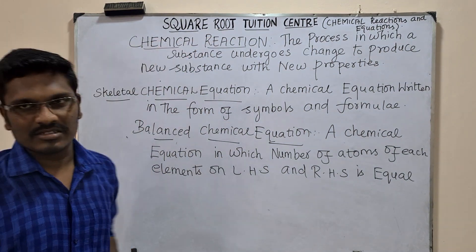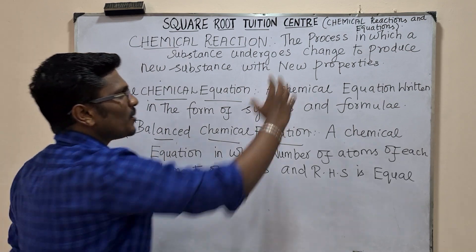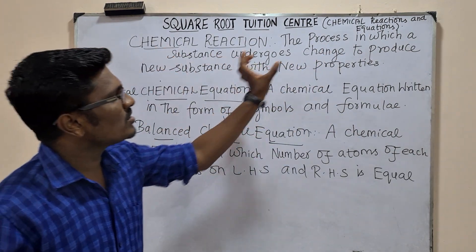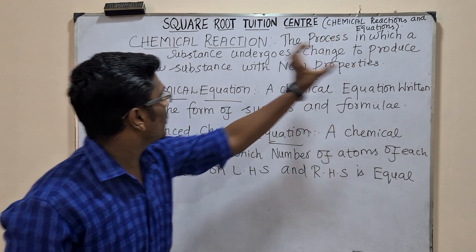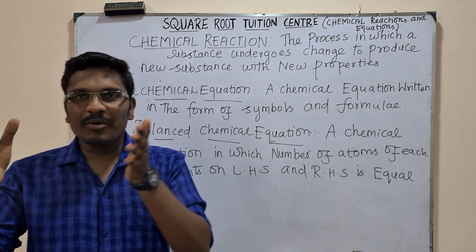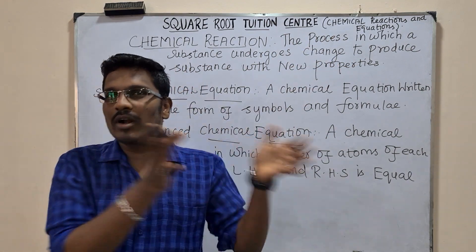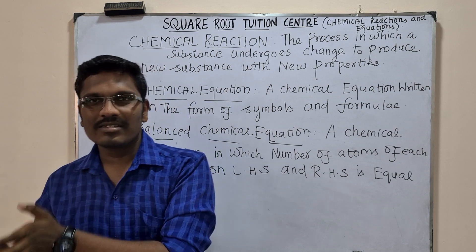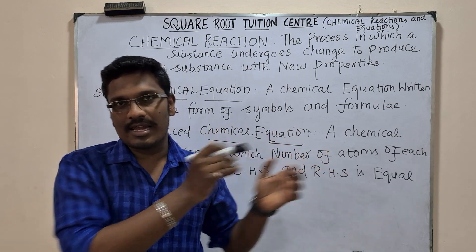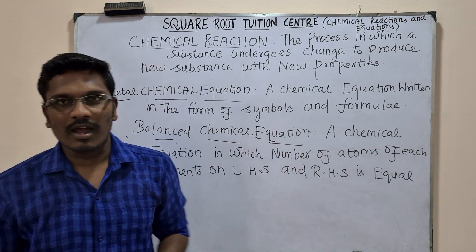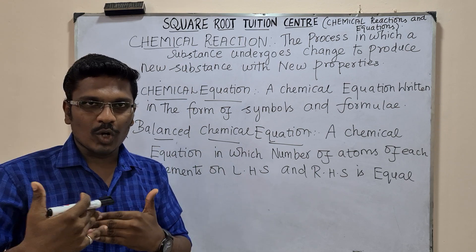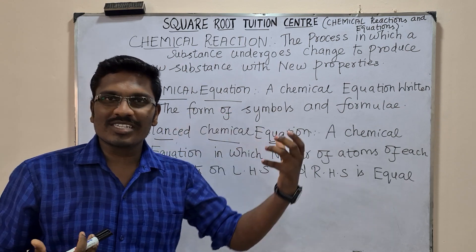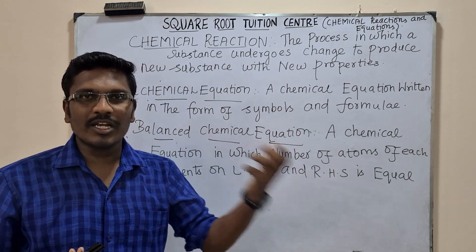One: chemical reaction. A chemical reaction is the process in which a substance undergoes change to produce a new substance. That is the reactant on the left-hand side, which takes part to produce a new substance, and the product on the right-hand side.